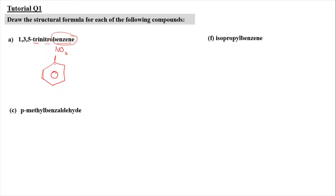So carbon number 1, 2, 3 — at carbon number 3 there is going to be another nitro group, NO2. Then counting 1, 2, 3, 4, 5 — at carbon number 5 there is going to be another nitro group. This compound is known as 1,3,5-trinitrobenzene.